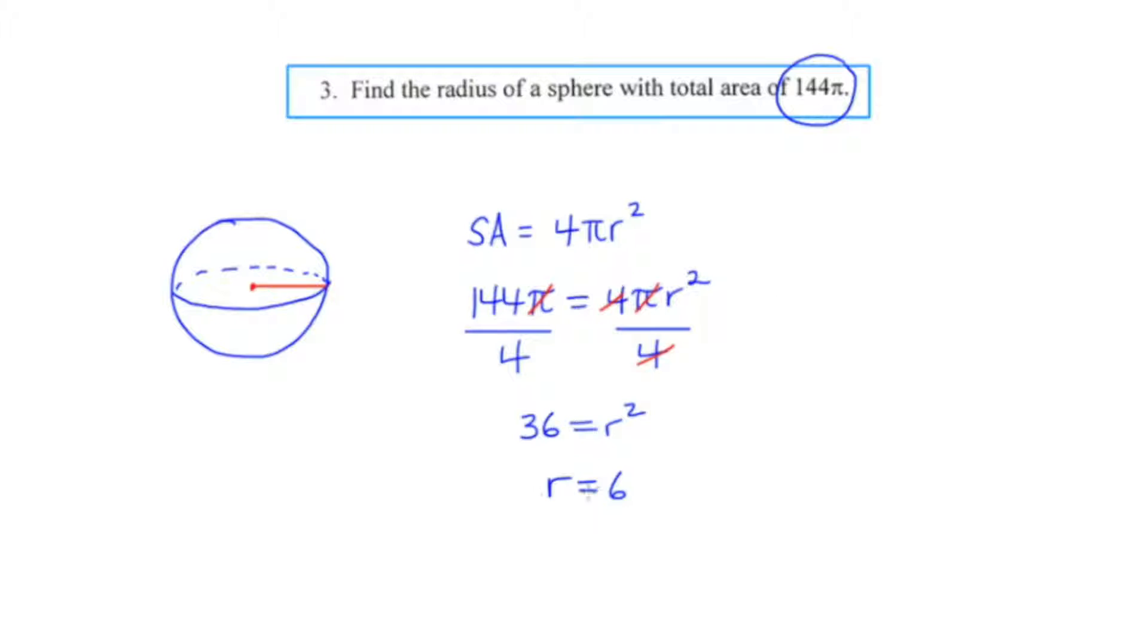So we've just found the radius of the sphere by using the formula sort of backwards. We're not asked to find the surface area. We're given the surface area and use the formula backwards to find the radius. Let's take a look at another example.